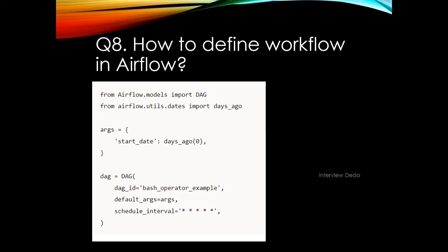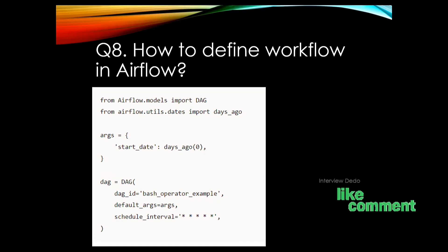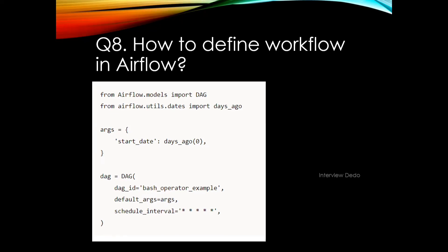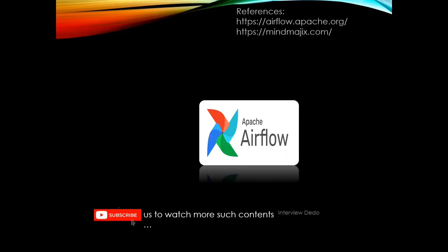Inside the DAG you define your workflow. There are many lines involved, but the simple example shown here demonstrates how you can schedule a DAG using a start date to launch tasks on a certain date. The schedule interval specifies how often the workflow will run — for example, five asterisks represent a cron expression where the task runs every minute, but you can change it to run hourly, daily, or on any schedule. Please subscribe and comment below if you need more questions on Apache Airflow or any other topic.